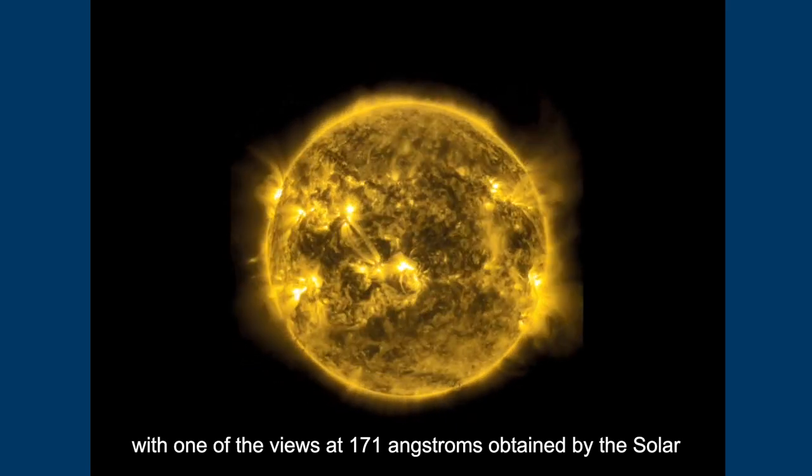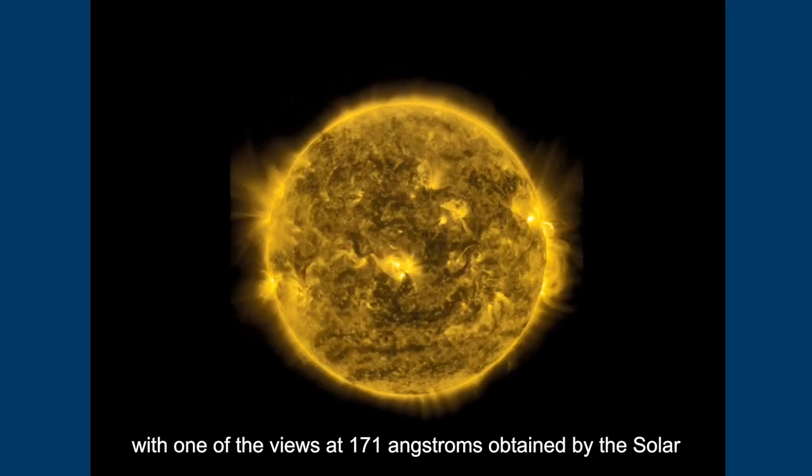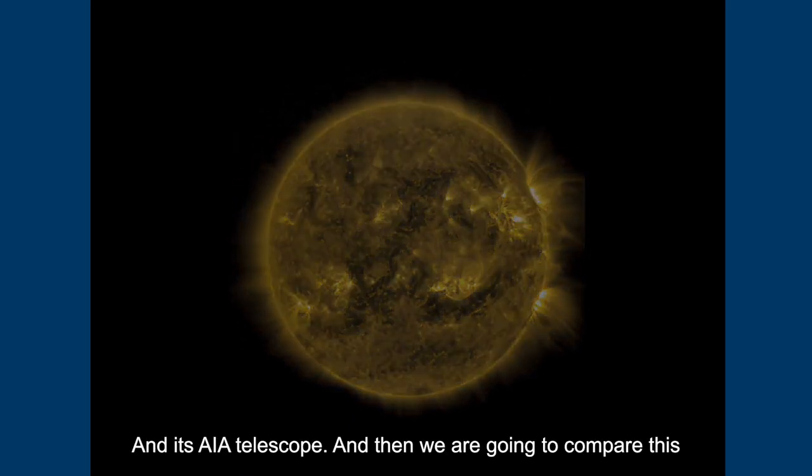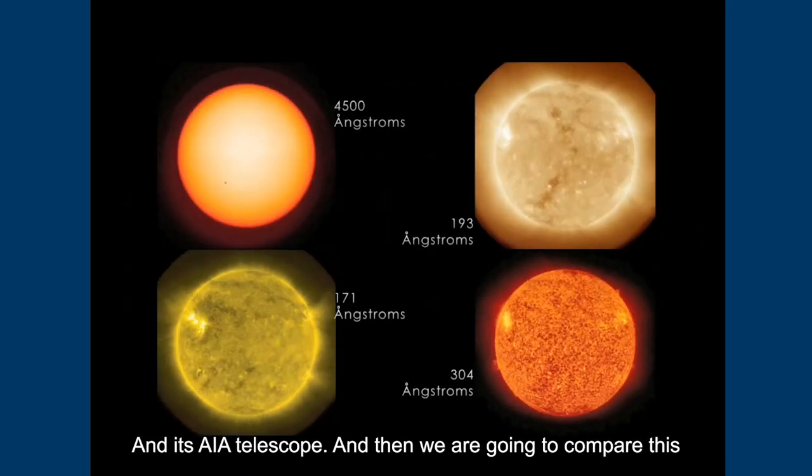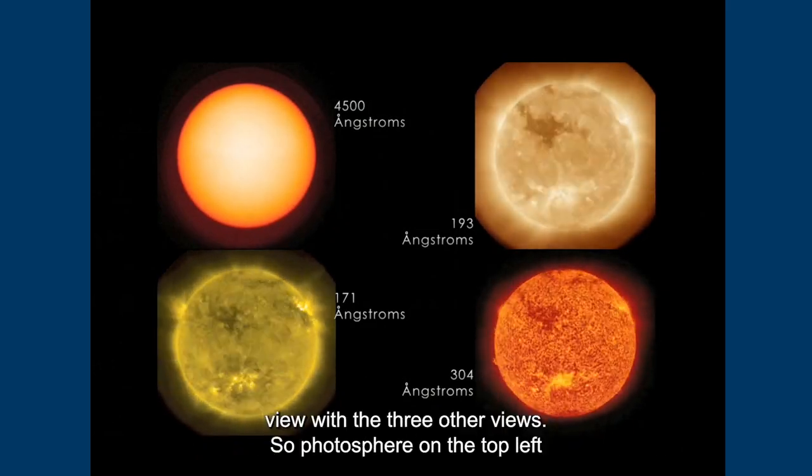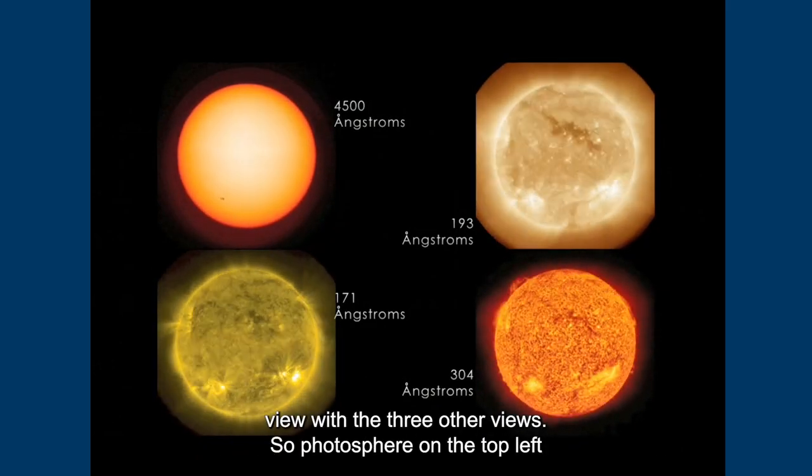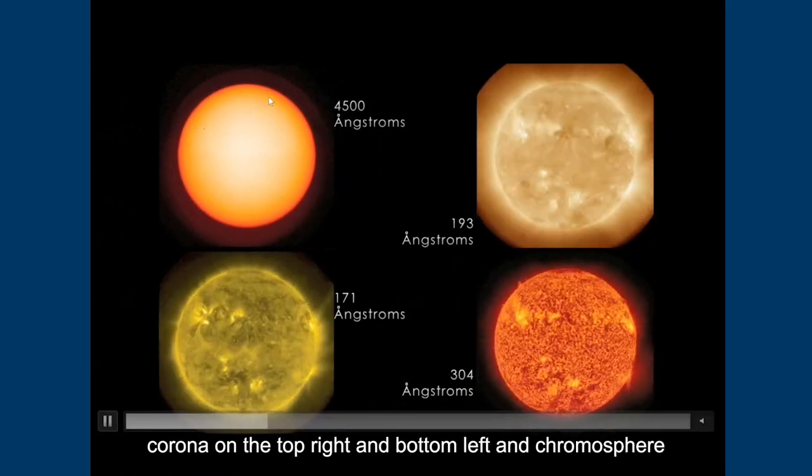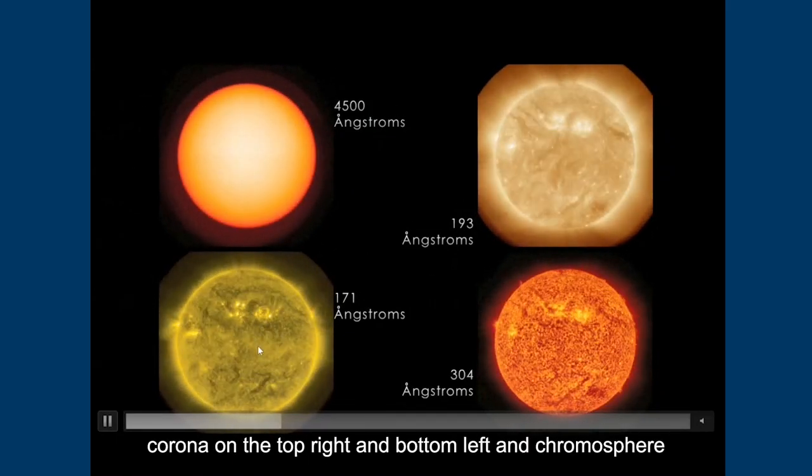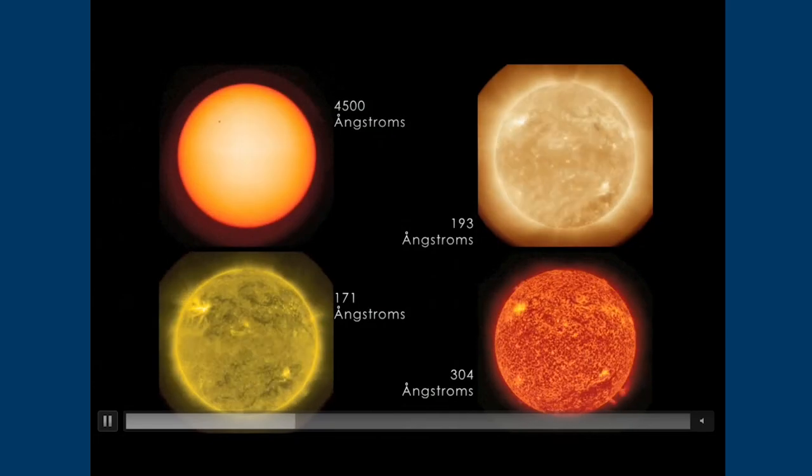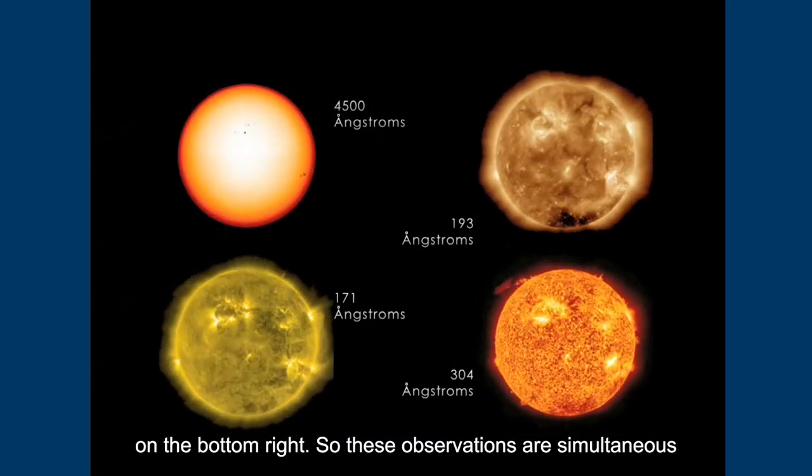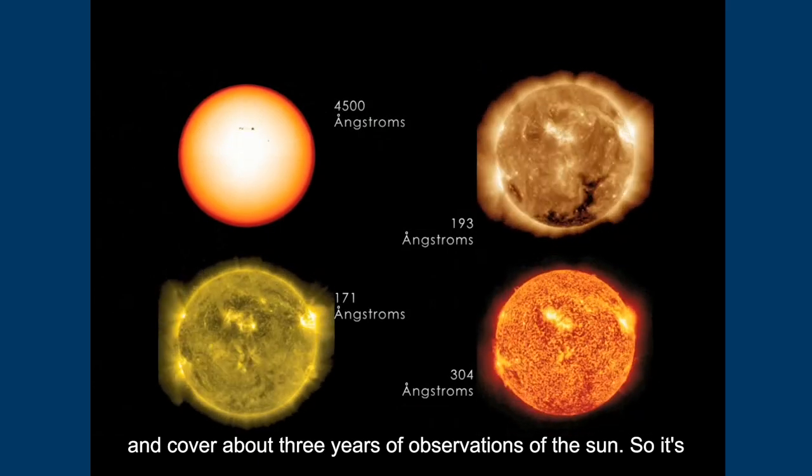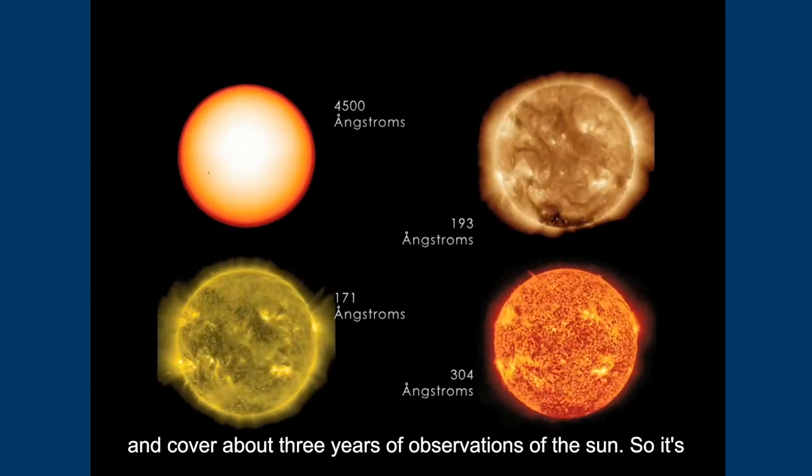So I'm going to illustrate this with a movie where we start with one of the views at 171 angstroms obtained by the Solar Dynamics Observatory satellite and its AIA telescope. And then we are going to compare this view with the three other views: photosphere on the top left, corona on the top right and bottom left, and chromosphere on the bottom right.